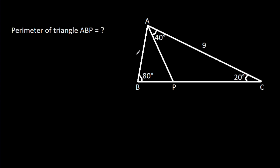In this video, we have been given that AC is 9, angle ACB is 20 degrees, angle CBA is 80 degrees, and angle CAP is 40 degrees. We have to find the perimeter of ABP. Suppose AB is A, BP is B, and AP is C, then we have to find A plus B plus C.